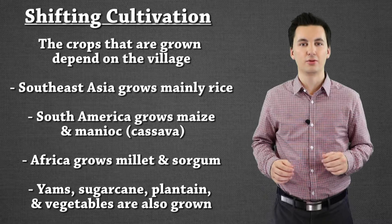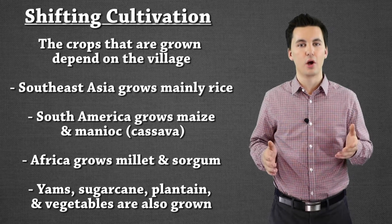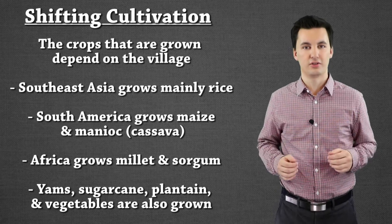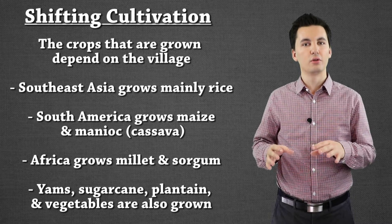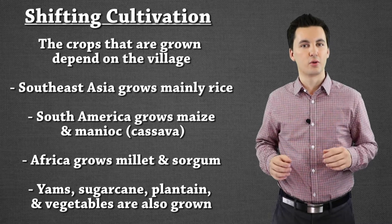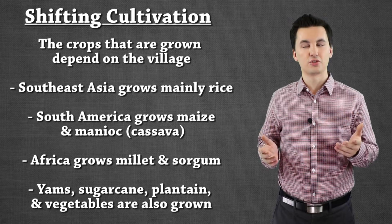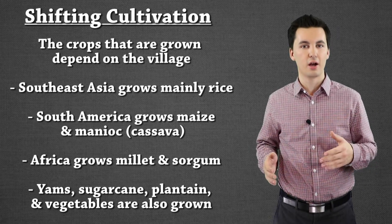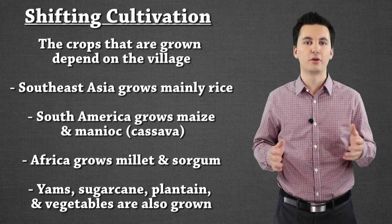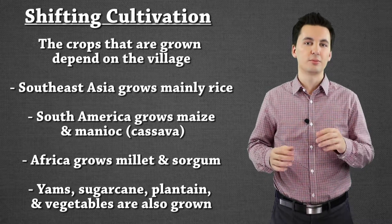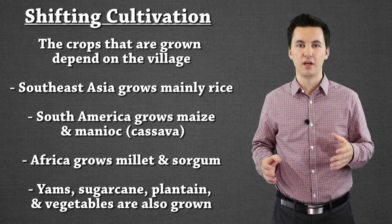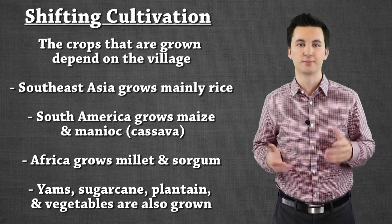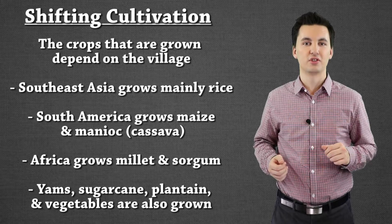The other interesting thing about this is actually the crops that are grown. You can see on the screen all the different crops that are grown in this type of agriculture. Even though less than 5% of the world practices it, it's interesting seeing all the different crops, which depend on the culture that is there and also geographically where these things are being grown. So something to think about for shifting cultivation — is it better for the environment, or would it be better if it didn't exist?